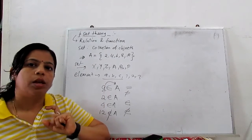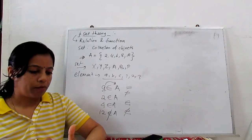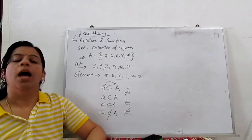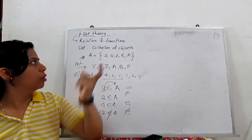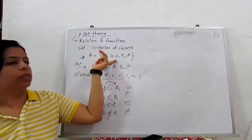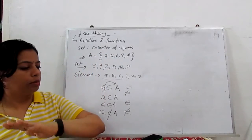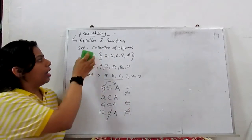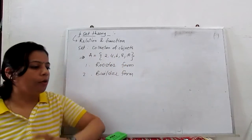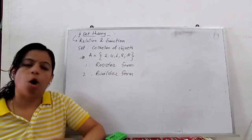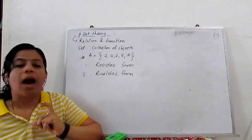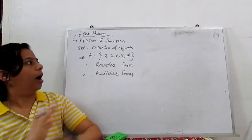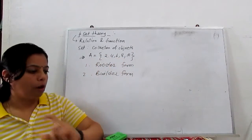Next, the representation of a set. There are 2 types of representation. One is called roster form and the other is called builder form. Roster means describe everything. Roster form means all elements are listed with commas. So this is called roster form.